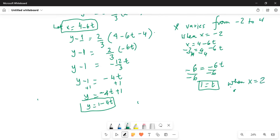When x is 4, we have 4 equals 4 minus 6t. Subtract 4 on both sides, so we have 0 equals -6t, or t equals 0.